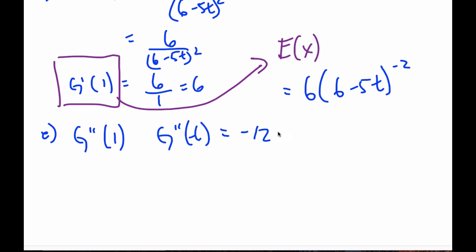So now I can apply the chain rule. So I get minus 12, six minus, subtract one times minus five, the inside derivative, which gives me 60, six minus five T to the minus three. And I'm asked to find G double prime at one. Plugging in the one gets me 60.